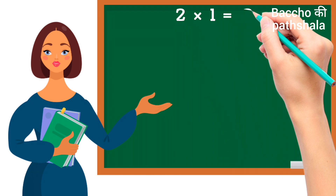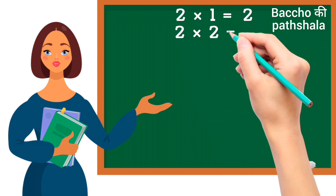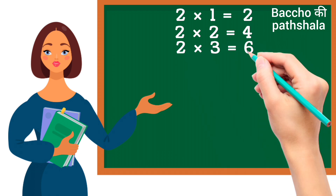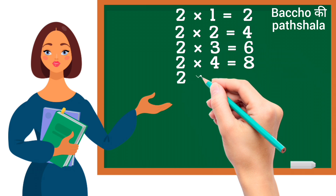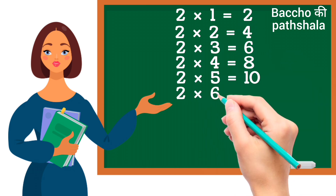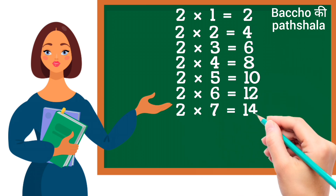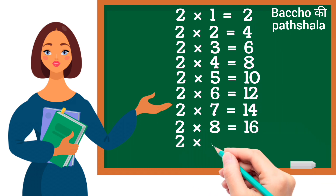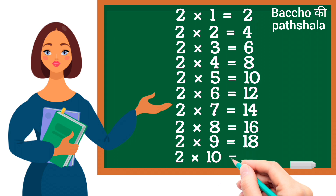Two ones are two. Two twos are four. Two threes are six. Two fours are eight. Two fives are ten. Two sixes are twelve. Two sevens are fourteen. Two eights are sixteen. Two nines are eighteen. Two tens are twenty.